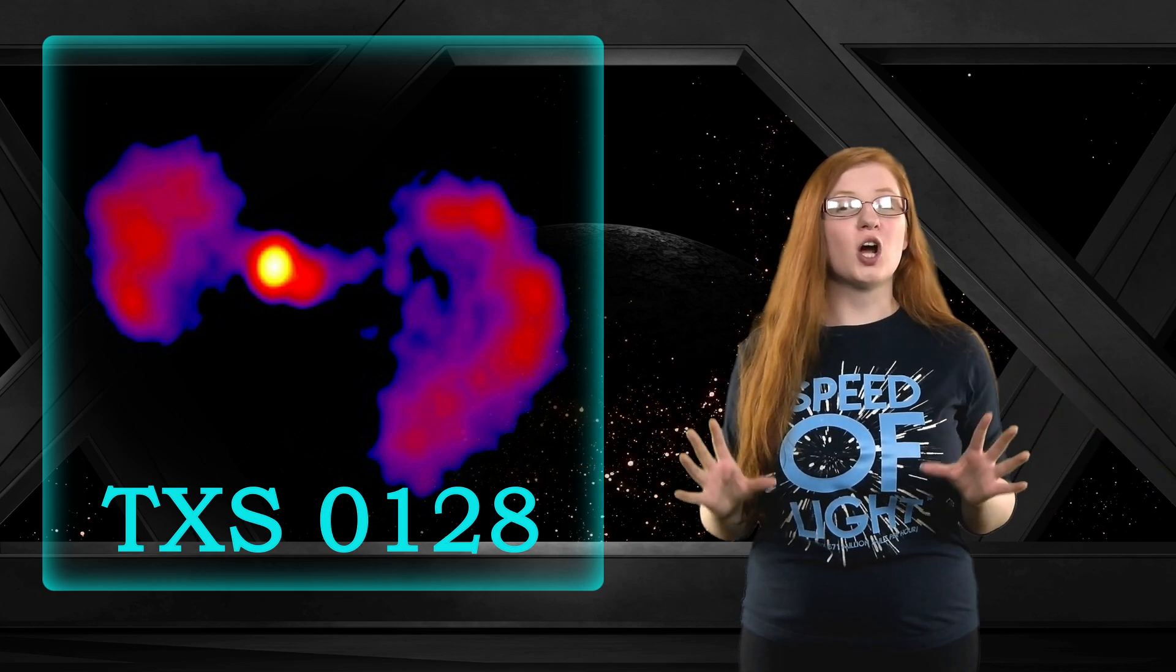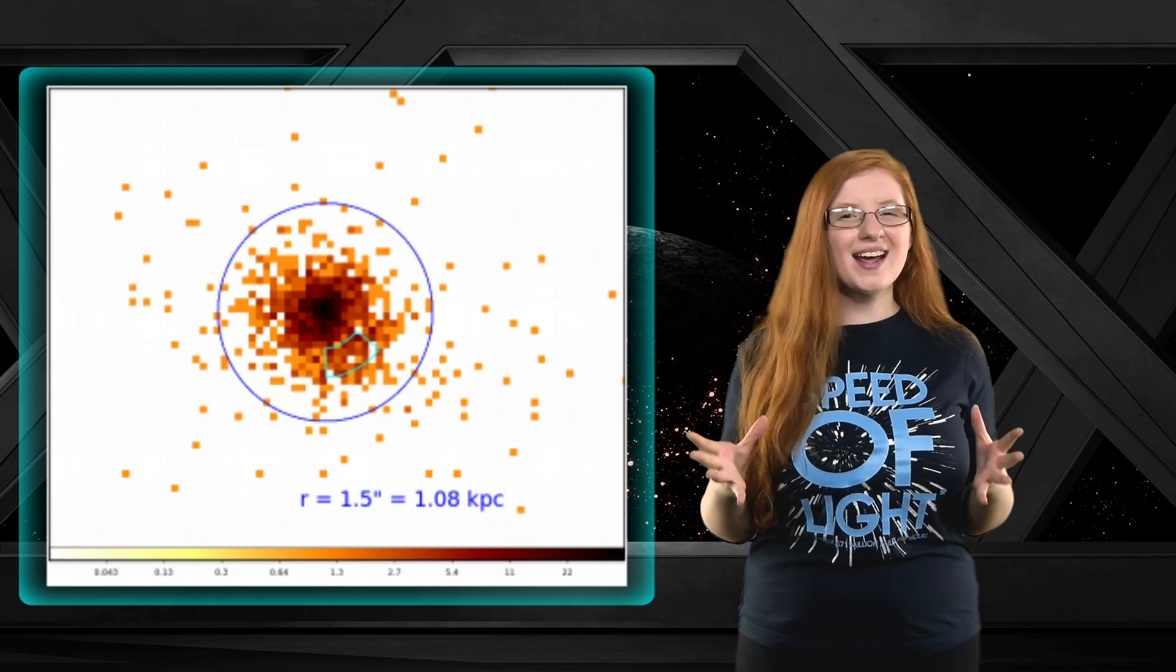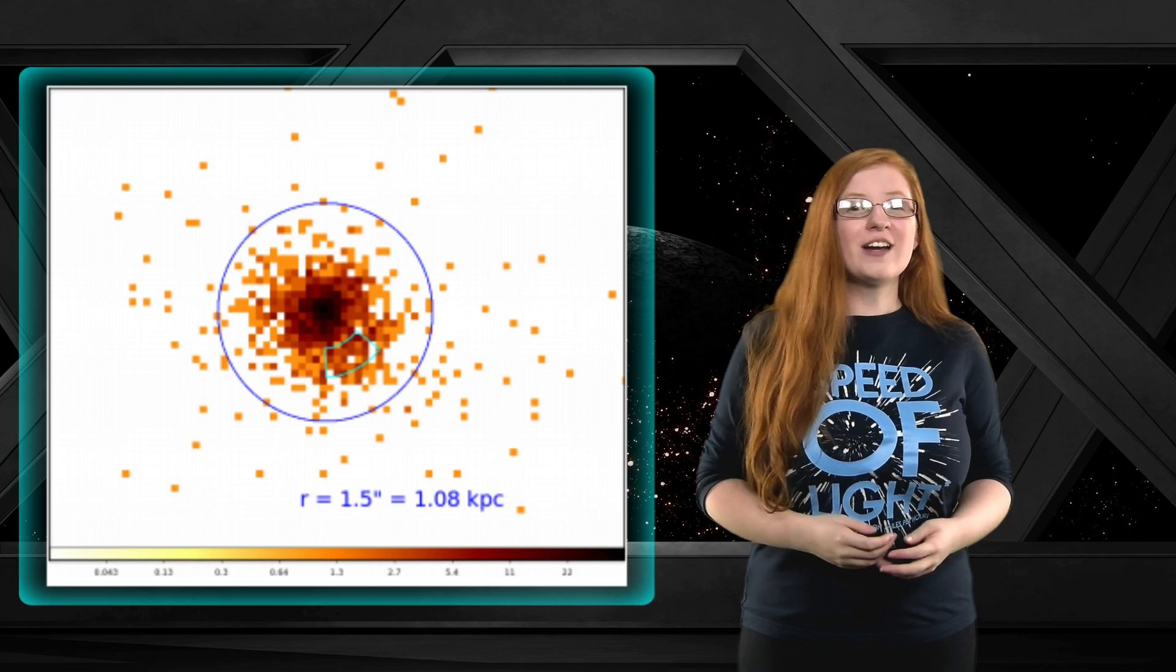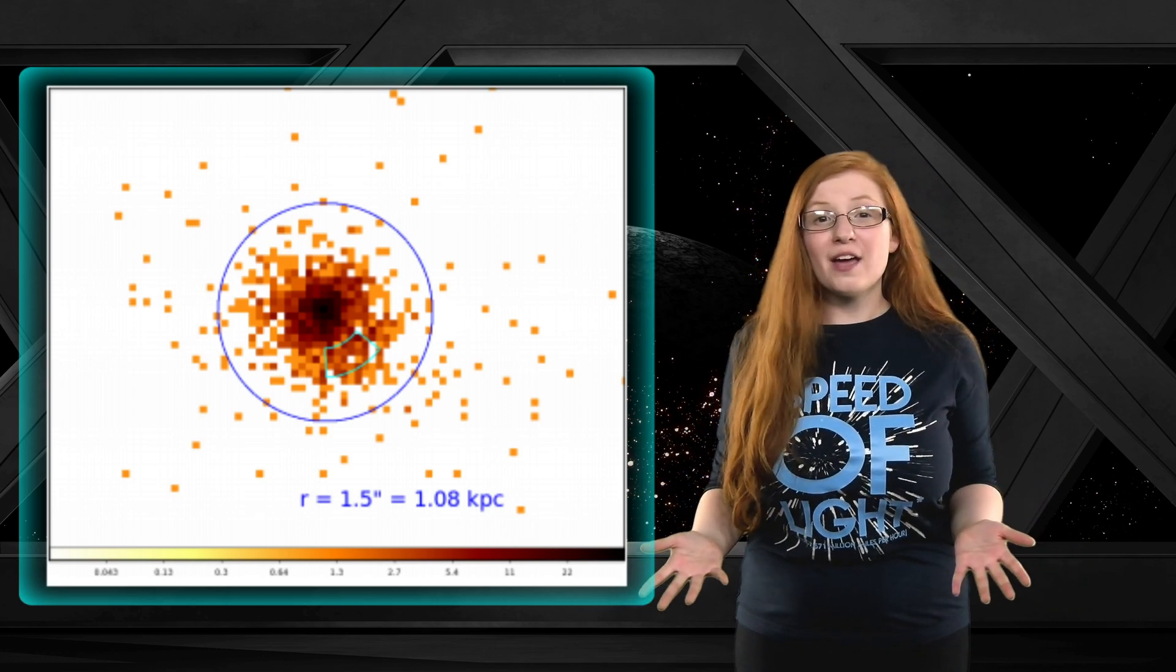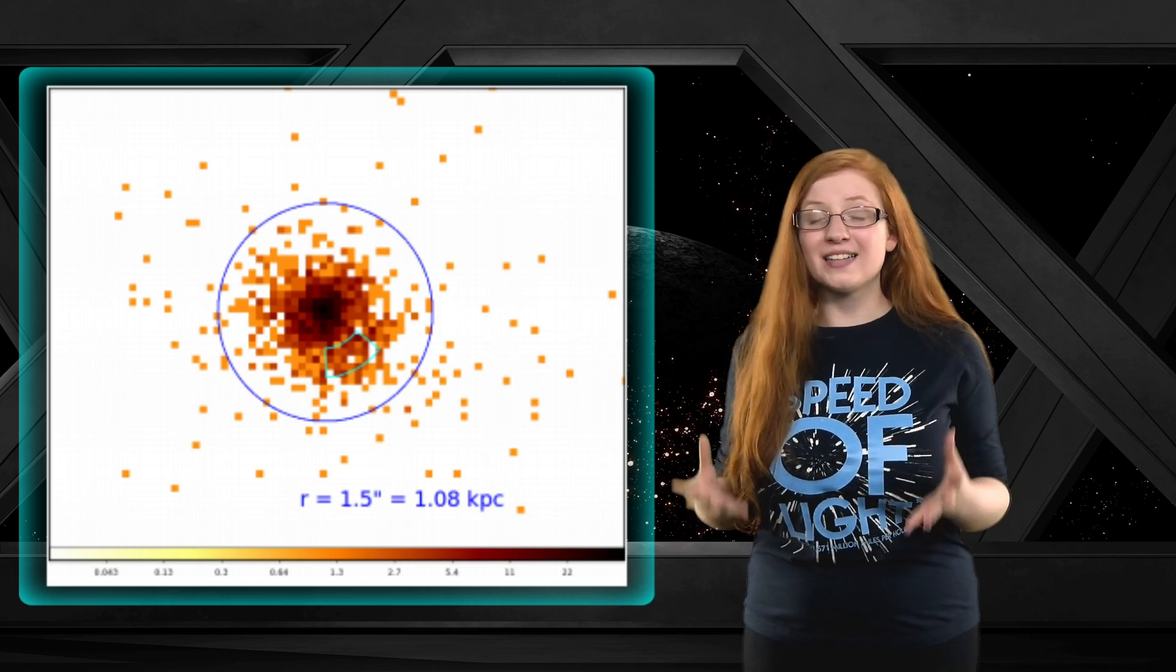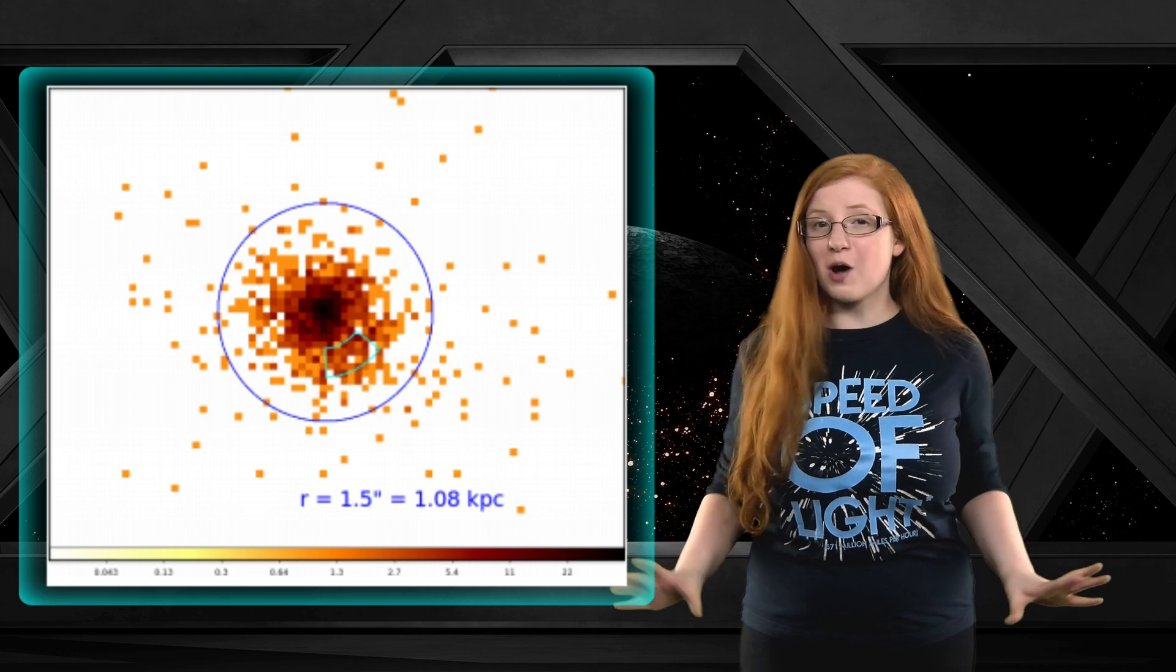They then used the Chandra X-ray telescope to look closer at the core of the galaxy. They were looking for a cloud of ionized gas surrounding the center. They couldn't find evidence of it being there or not being there. There has been evidence for other galaxies having a cloud of ionized gas around their core, so it is totally possible.